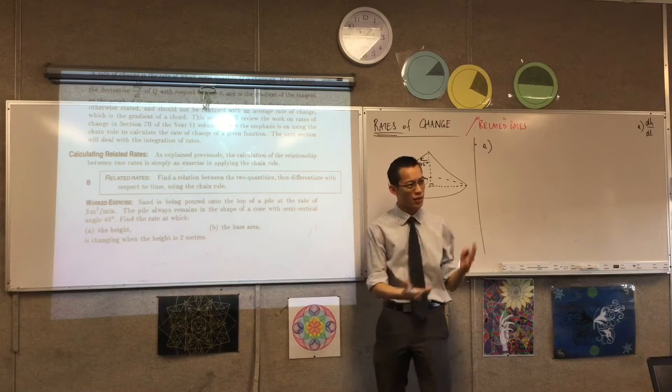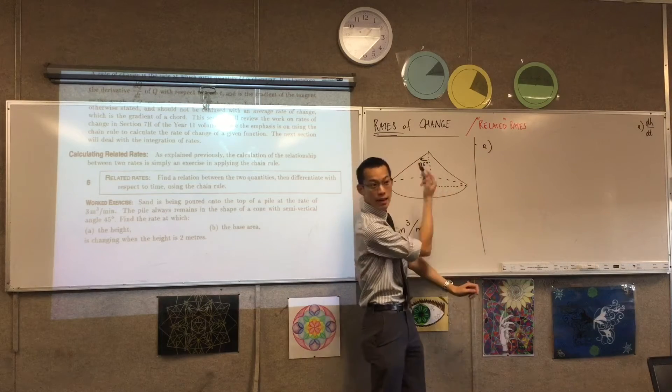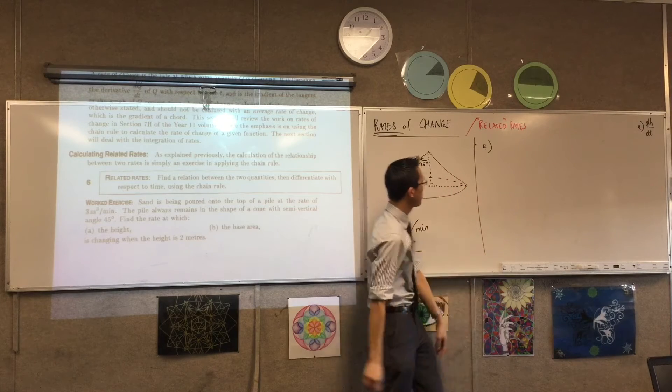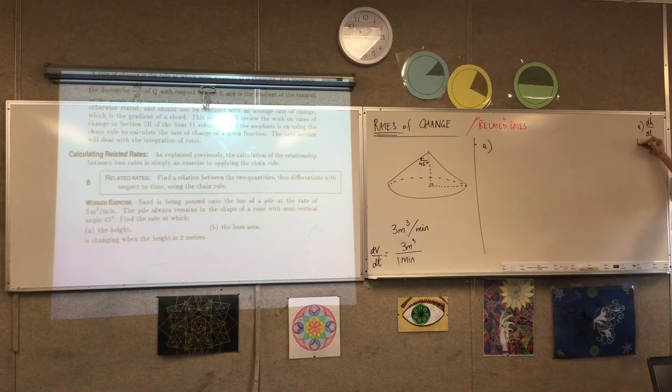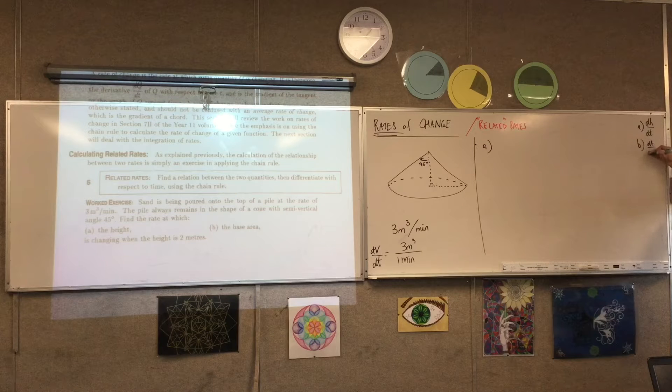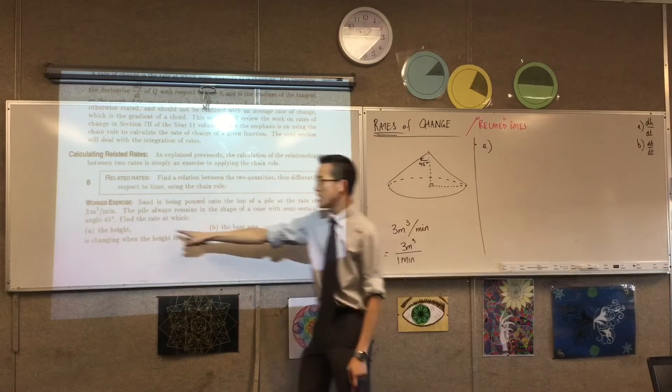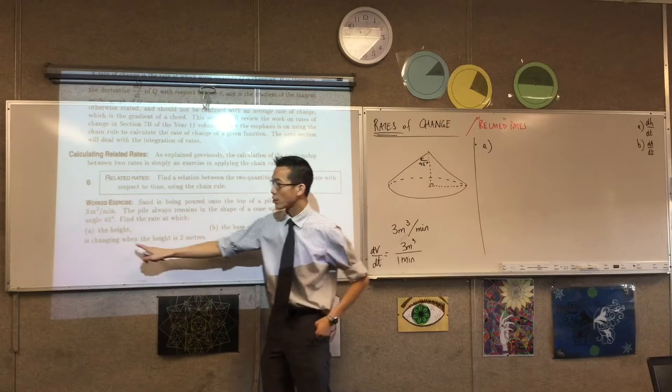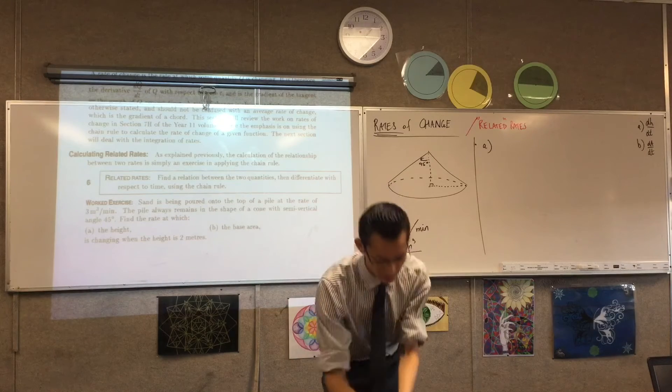Now, A is a bit of a catch-all name. Like, A could be the entire area, or it could be just the slant area, that shape which, if you unfold it, will become a sector. But I'm just going to call it DA/DT. That's what I'm after. And I want each of those, the rate at which each of them is changing, when the height is 2 meters. So I'm just going to add that to both.